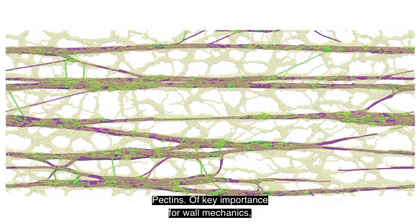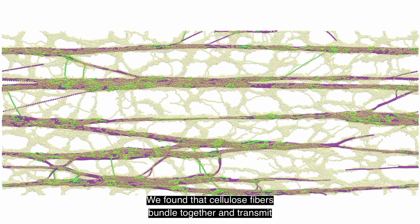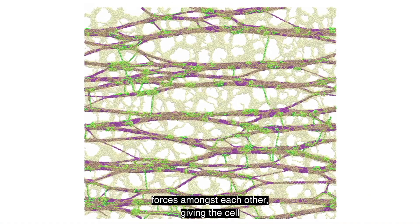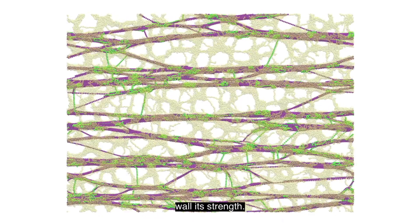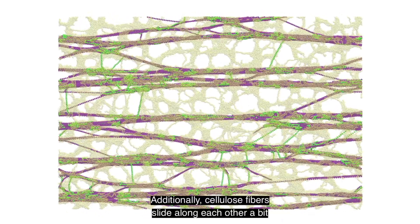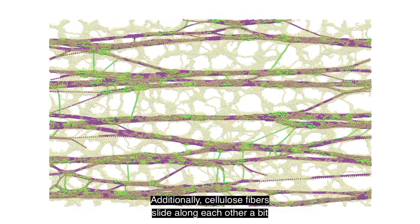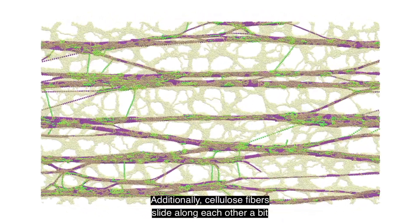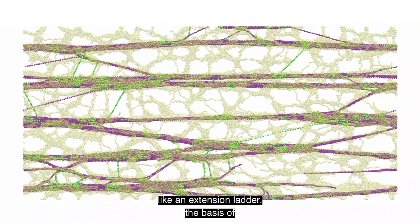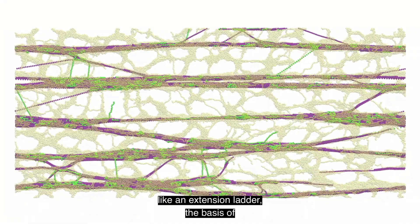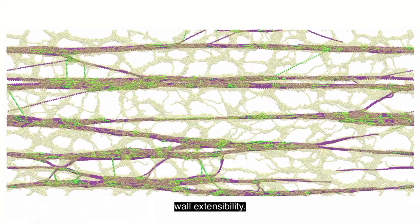Of key importance for wall mechanics, we found that cellulose fibrils bundle together and transmit forces amongst each other, giving the cell wall its strength. Additionally, cellulose fibrils slide along each other, a bit like an extension ladder — the basis of wall extensibility.